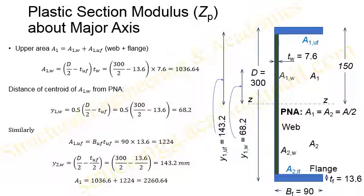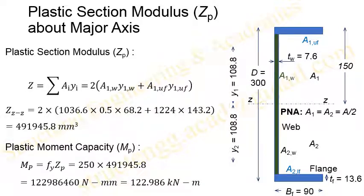Similarly, the area of the flange is width of flange multiplied by thickness of flange, which gives 1224 mm². Note that the segment common to both web and flange has been considered in the flange only to avoid repetition. The distance of the centroid of the upper flange area from the plastic neutral axis is d/2 − t_uf/2, which equals 143.2 mm.